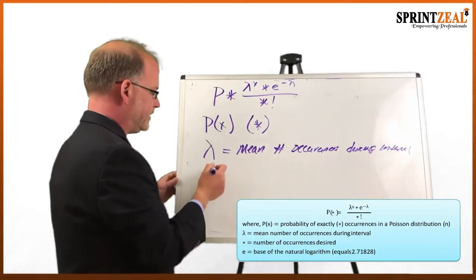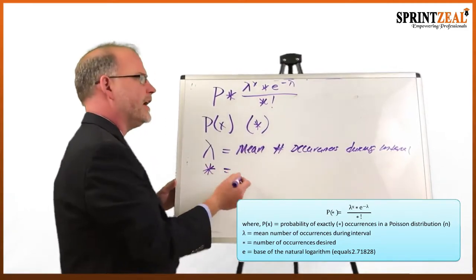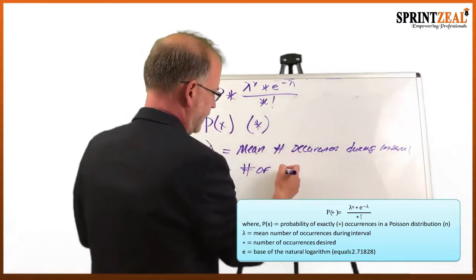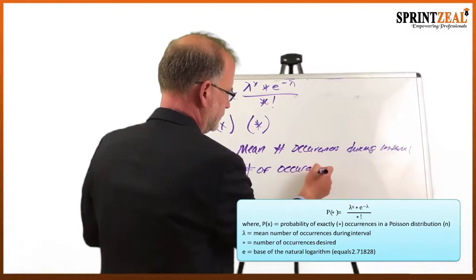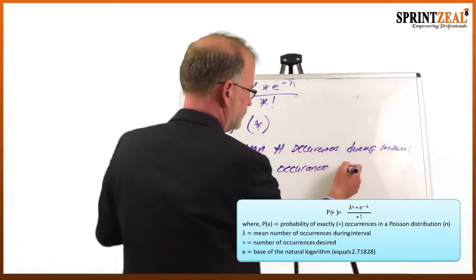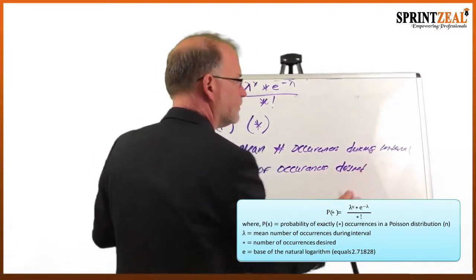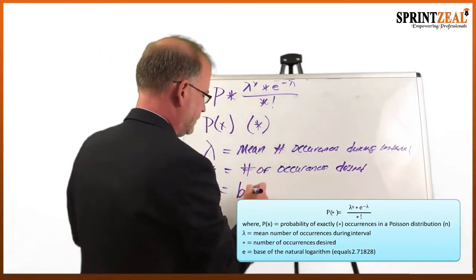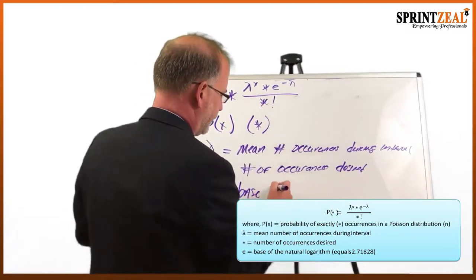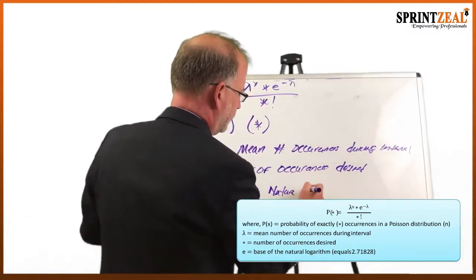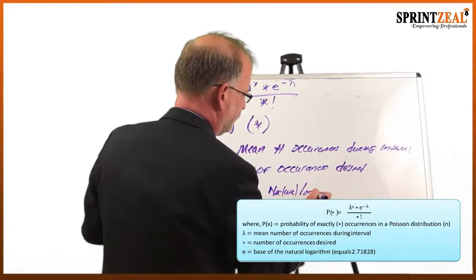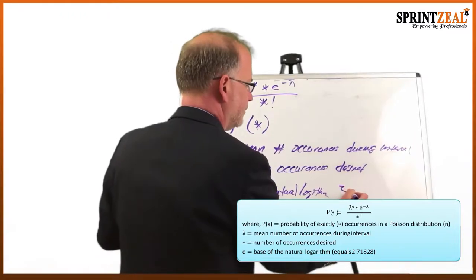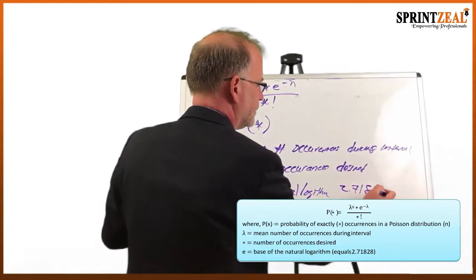The next symbol is x (represented as an asterisk or star in the formula), which equals the number of occurrences that we desire. And finally, we have the lowercase e, which is the base of the natural logarithm. The natural logarithm always stays the same — its value is 2.71828.